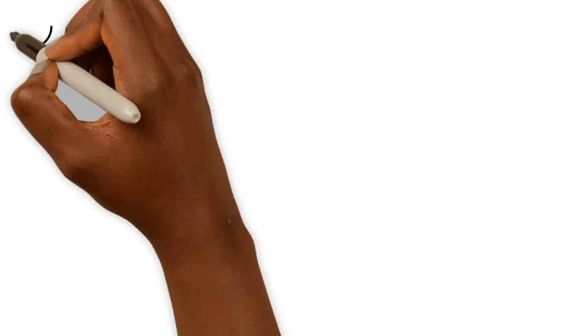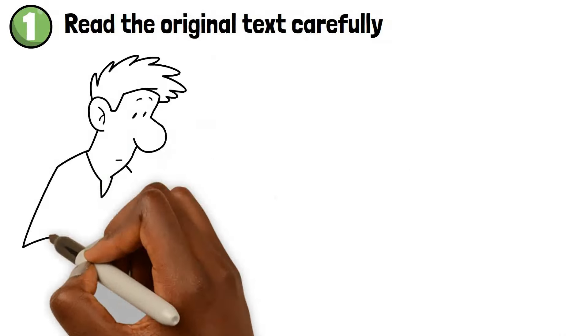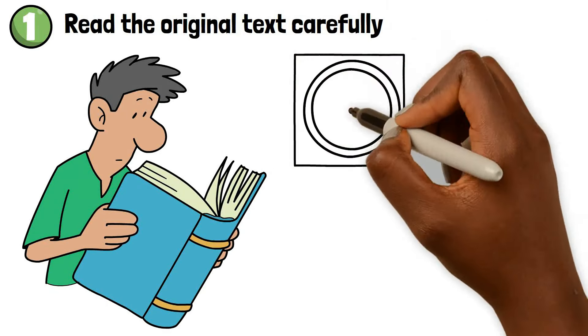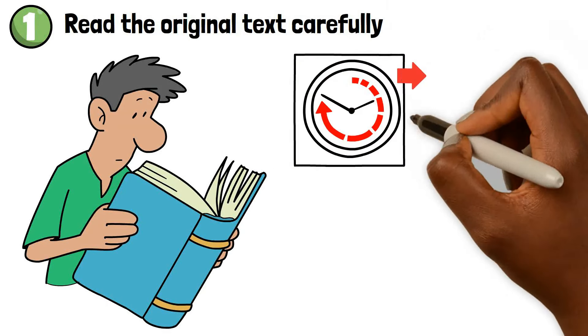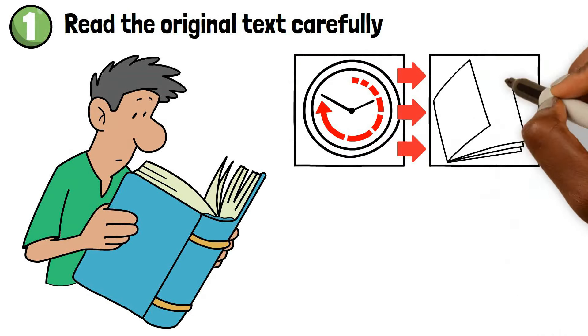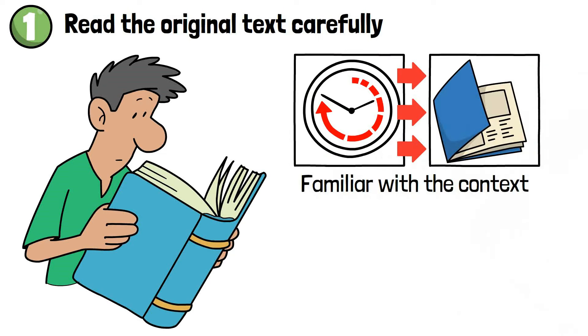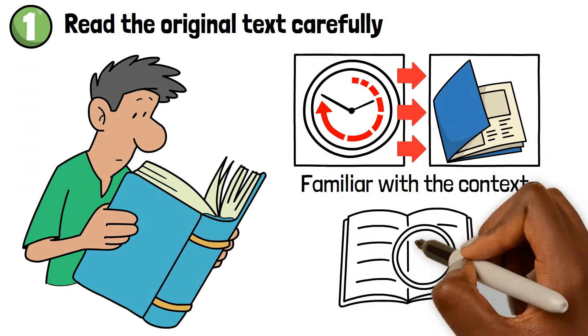Step number one: read the original text carefully. This step requires you to read the text several times to become familiar with the context and check the meaning of terms you do not understand.